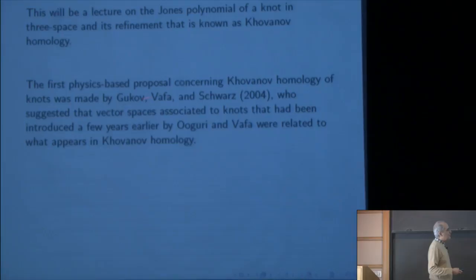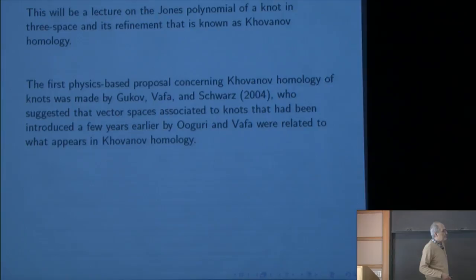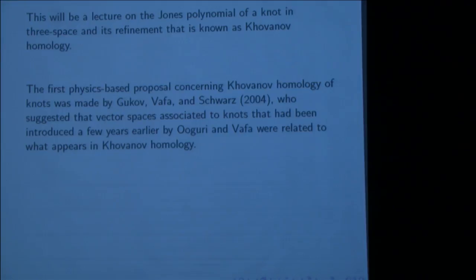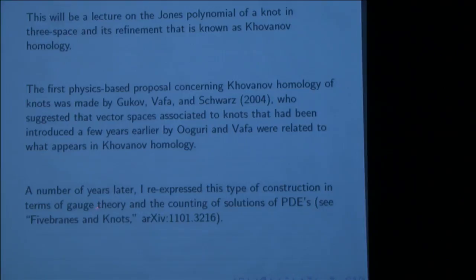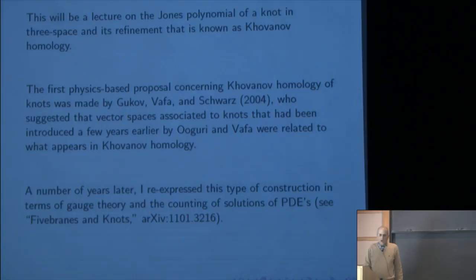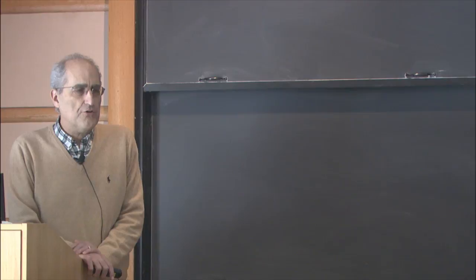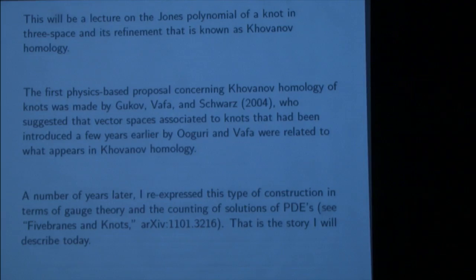The first physics-based proposal was made by Gukov, Vafa, and Schwartz concerning Khovanov homology. They interpreted Khovanov homology in terms of vector spaces introduced a few years earlier by Agranovic and Vafa. A number of years later, I reinterpreted this construction in terms of gauge theory and the counting of solutions of partial differential equations. I had two goals: one was to make the relationship with the description of the Jones polynomial in quantum field theory more transparent, and the other was to make the whole subject more accessible to mathematicians.